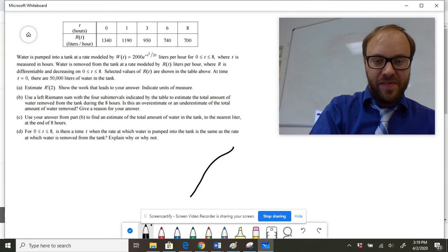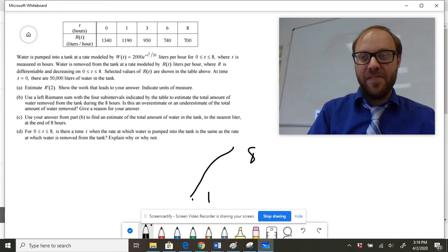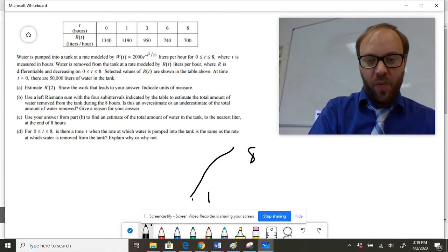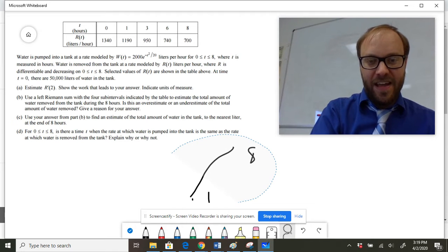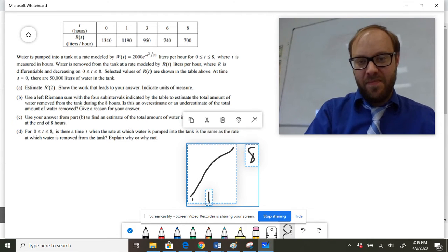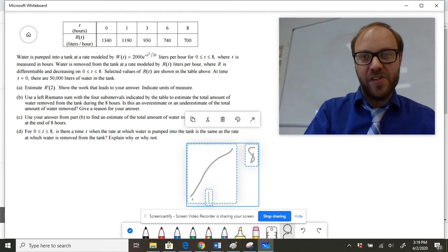Remember, the intermediate value theorem just says if you have a function that goes between two different points, let's say it starts out at one and ends at eight, if that function is continuous, it would have to contain any value between one and eight. And so as a result, that function would contain seven or 6.2 or that sort of thing.